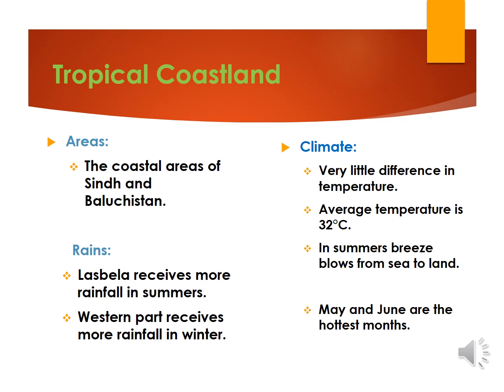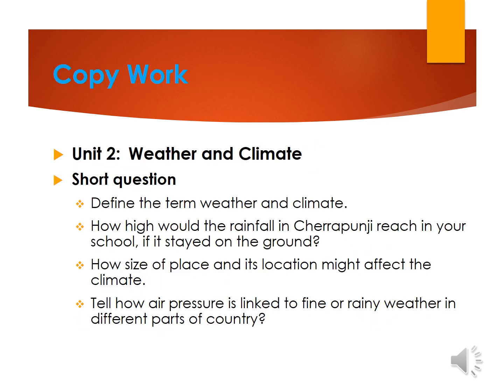Areas of Tropical Coastland include the coastal areas of Sindh and Balochistan. The coastal area of Lasbela receives more rainfall in summers, while the western part of this climatic region receives more rainfall in winter. There is very little difference in temperature, and the average temperature of this region is 32 degrees Celsius. In summers, breeze blows from sea to land. May and June are the hottest months of this climatic region.